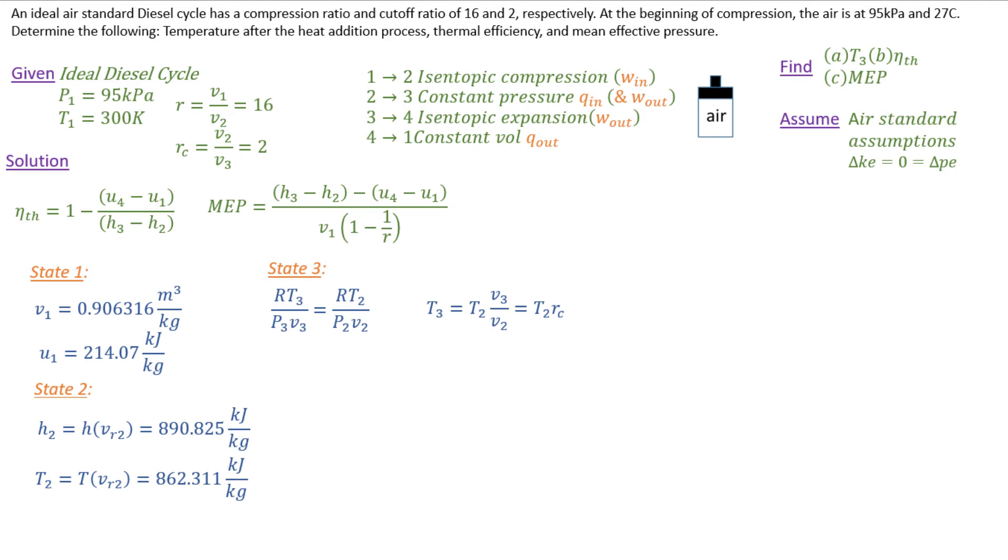...require me to go all the way back over there to state 2 and interpolate in my ideal air tables at that VR_2 value, which I determined using my isentropic relationship just a second ago. So I've got a temperature of 862.311, and if I plug that in my T3 equation up here on the top right, I get 1725 Kelvin. I'll need to go ahead and pull off my H value to be able to plug into my thermal efficiency and mean effective pressure equations. So I've got part A—that's my T3, 1725. Check, I've done that.